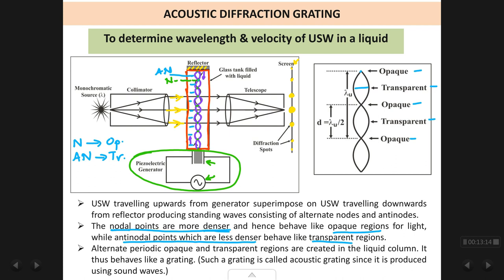We have a monochromatic source of light, because we require a parallel beam of light to fall on this grating formed in the liquid column. Normally we use a sodium vapour lamp, which has a single wavelength of 5893 Angstrom units.